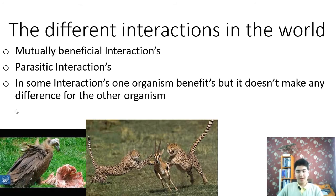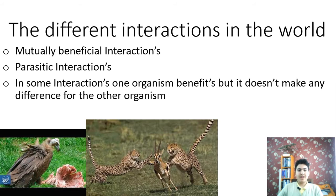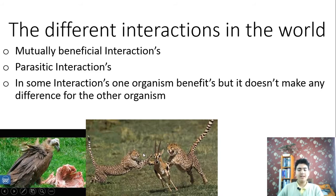But in some interactions, both of the organisms that are interacting are harmed. For example, when two plants compete for soil that has low supplies and resources, eventually one of them dies — so it's harmed — and the other gets the soil but finds it depleted of nutrients, so both are harmed. In conclusion, interactions among organisms help regulate the functioning of the ecosystem as a whole.